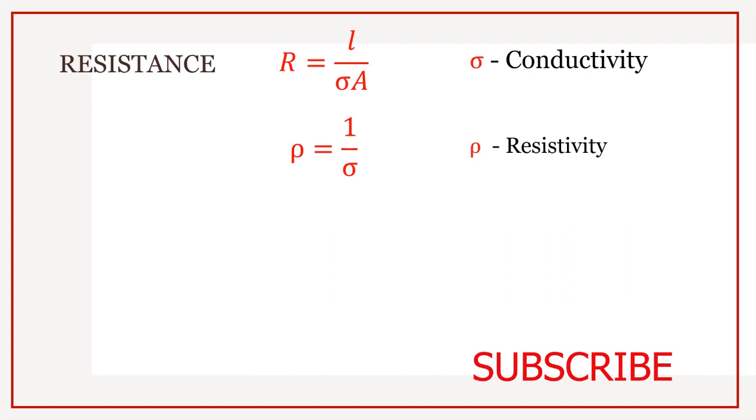That is, the reciprocal of conductivity is resistivity. And so resistance could be written as R equals Rho L by A.